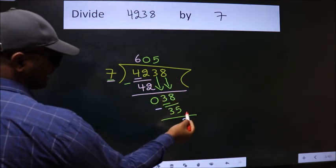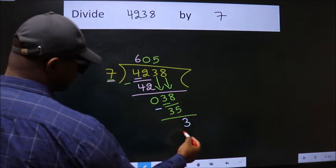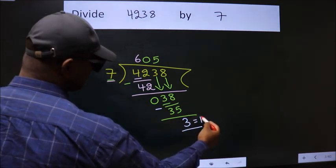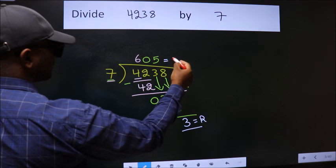No more numbers to bring down. So we stop here. This is our remainder. This is our quotient.